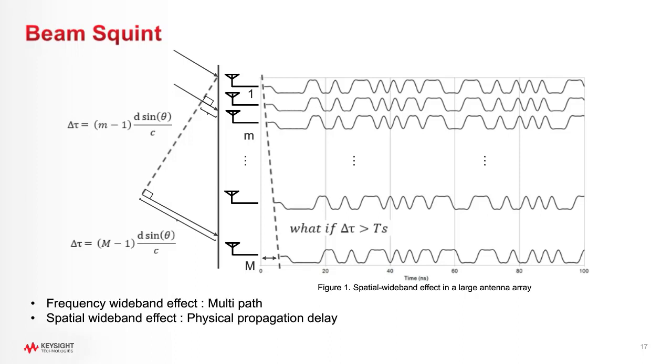If this propagation delay across the array is comparable to the symbol period, the different antenna elements will receive the different amplitude and phases of the same symbols as described in Figure 1. This is an inherent property of the large-scale array called the spatial wideband effect. A wideband signal will have a slight variation of the antenna radiation pattern as a function of a frequency, which is generally referred to as beam squint. The spatial wideband effect in a large antenna array is similar to the frequency wideband effect. While frequency selectivity results from the multipath delay, the spatial wideband effect exists on a large antenna array even in a line-of-sight channel with no multipath.